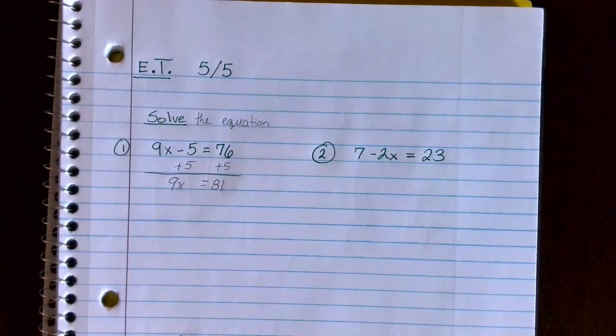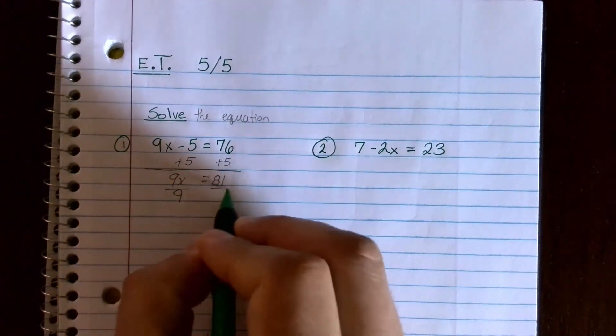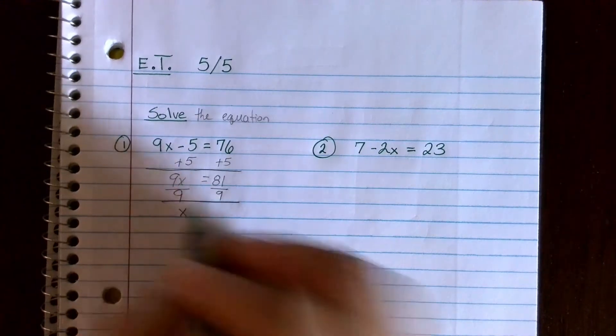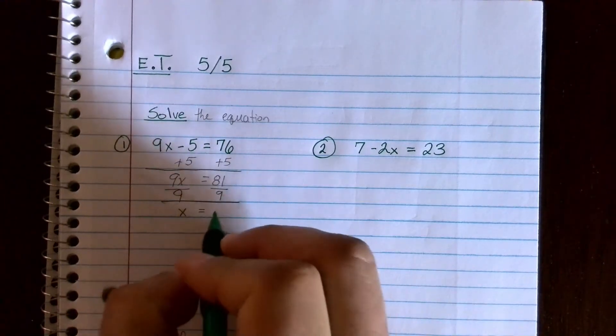Now I got 9 times x equals 81. The opposite of multiplying by 9 is to divide by 9. 9 divided by 9 is 1, so I'm left with 1x or just x, and 81 divided by 9 is 9.